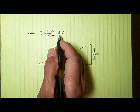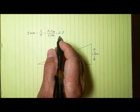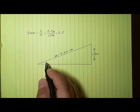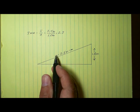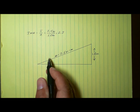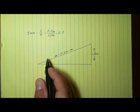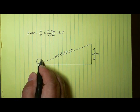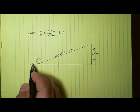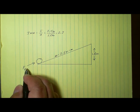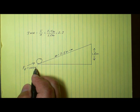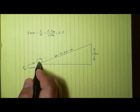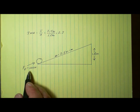The ideal mechanical advantage tells you how many times this machine will multiply any effort force you put into it. So if we want to figure out what resistance we can move up this ramp with any given effort force, we can do that. Let's propose a scenario where we place a barrel on this inclined plane and apply an effort force of 100 newtons.